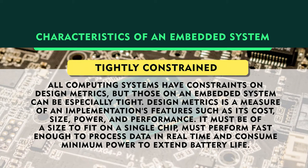The other characteristic is that it is tightly constrained. All computing systems have constraints on design metrics, but those on an embedded system can be especially tight. There will not be any leniency or loosely placed constraints. The design matrix is a measure of implementation features such as cost, size, power, and performance. It must be of a size to fit into a single chip, must perform fast enough to process data in real time, and must consume minimum power to extend battery life. Most of the systems we are talking about run on a battery, so power consumption is a key metric.